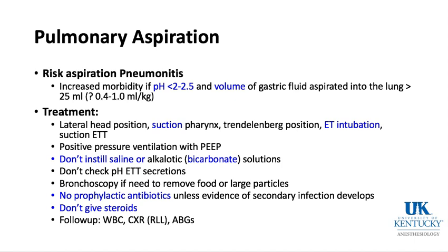If they had a laryngeal mask airway, potentially pull the LMA and suction, then insert an endotracheal tube and give positive pressure ventilation with PEEP. Do not put saline or bicarbonate solutions into the airway — it can worsen the pneumonitis. There is no recommendation to check the pH of endotracheal tube secretions to determine the risk of pneumonitis. If there are large food particles in the airway, bronchoscopy may be indicated.